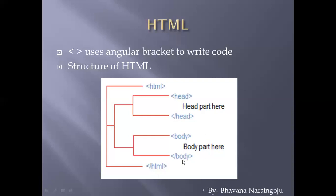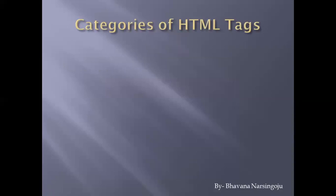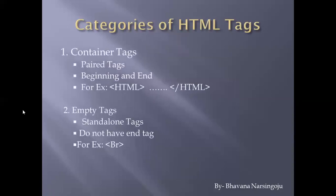There are two different categories of HTML tags: the first is the container tag and the second is the empty tag. Container tags are called paired tags — they are also called beginning and end tags. For example, the HTML tag has an opening tag and, with the forward slash, a closing end tag. Similarly, the head tag has an opening tag and a closing tag, forming a pair.